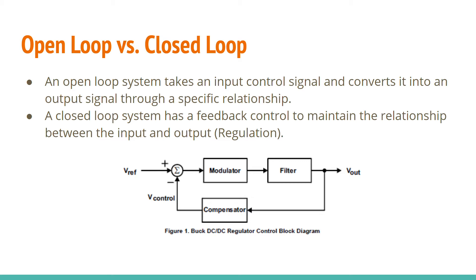The purpose of the feedback control system is to maintain the relationship between input and output. The term compensator means to compensate for imperfections in the system. In terms of transient responses, one of the imperfections is the time response or time constant. This delay is the time it takes the system to change from one state to another.